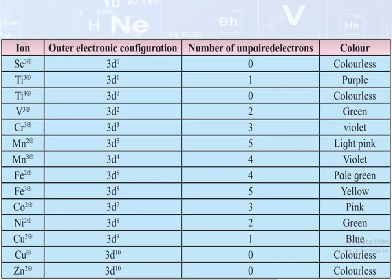In this table, different colors of 3D transition metal ions are given, showing the ions, their outer electronic configuration, number of unpaired electrons, and their color. For Sc³⁺, the electronic configuration is 3d⁰, with 0 unpaired electrons — it is colorless. For Ti³⁺, the configuration is 3d¹, with 1 unpaired electron — it is purple. For Mn²⁺, the configuration is 3d⁵, with 5 unpaired electrons — it is light pink. For Cu⁺, the configuration is 3d¹⁰, with 0 unpaired electrons — it is colorless. For Zn²⁺, the configuration is 3d¹⁰, with 0 unpaired electrons — it is also colorless.